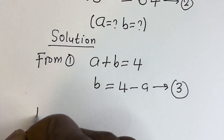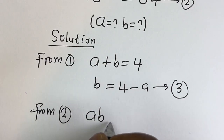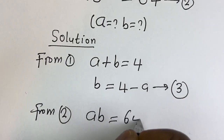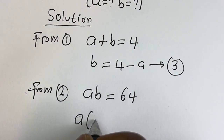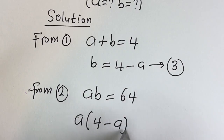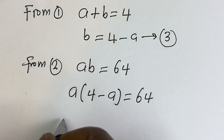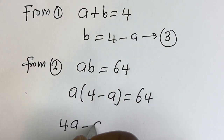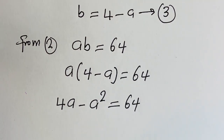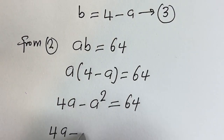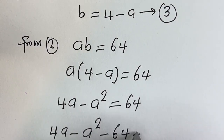Then from equation 2, AB is equal to 64. Let's substitute for B: A bracket (4 minus A) is equal to 64. Let's open the brackets — we have 4A minus A squared is equal to 64. So this gives us 4A minus A squared minus 64 is equal to 0.